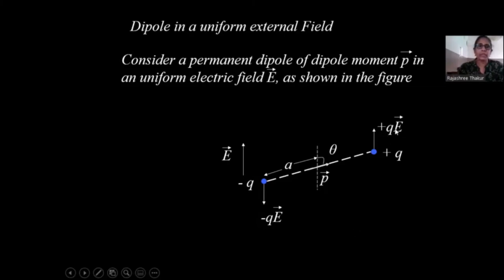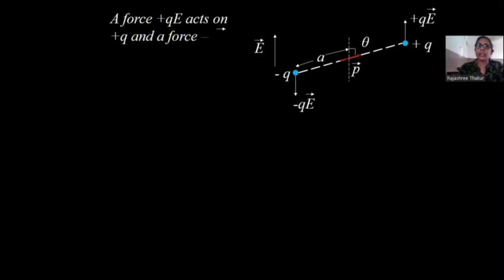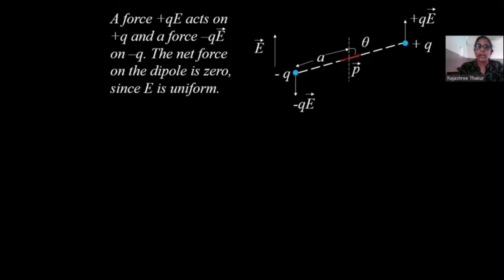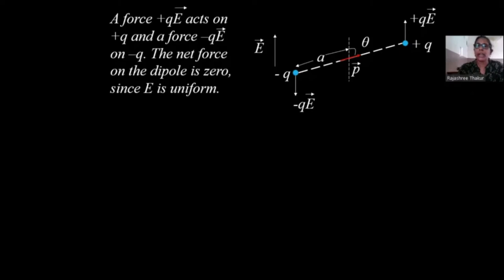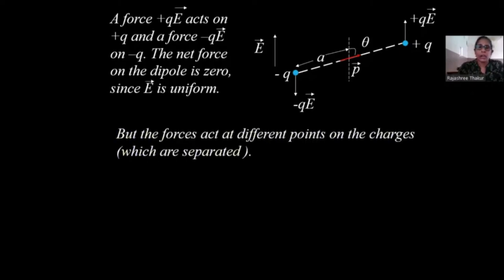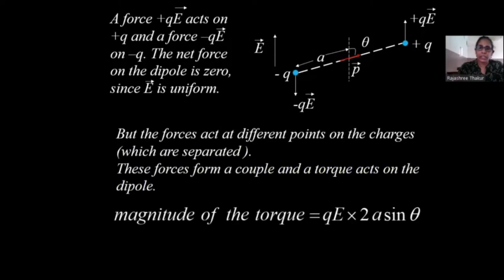These two forces form a couple, and hence a torque acts on the dipole, trying to turn it about the center. The net force on the dipole is zero — the two forces cancel. But a torque acts. The magnitude of the torque is qE times 2a sin theta, where 2a sin theta is the perpendicular distance between the two forces and theta is the angle between the dipole and the field.